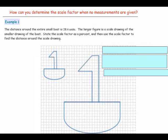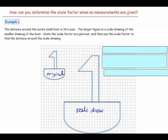In Example 1, the distance around the entire small boat is 28.4 units. The larger figure is a scale drawing of a smaller drawing of the boat. When working with scale, it's important to know which is the original and which is the scale drawing, so let's label that now. The smaller boat is the original, and the larger boat is the scale drawing. The perimeter of the original boat is 28.4 units.